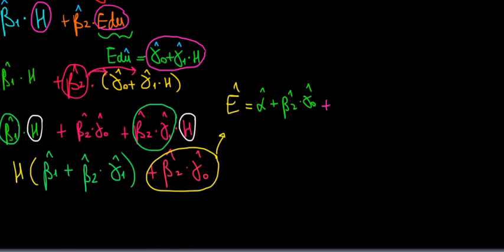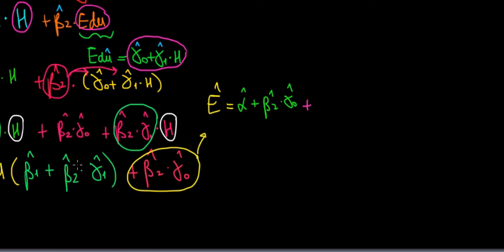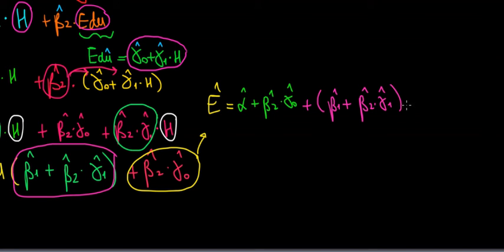Our earnings that we regress is going to be based on this constant, which is alpha hat plus beta 2 times gamma 0, and then we're left with height times the other parenthesis, and that parenthesis is the slope coefficient that is the effect of height on earnings. So we have beta 1 plus beta 2 times gamma 1 multiplied with the height.